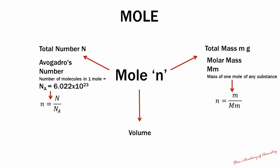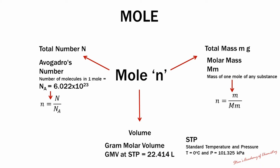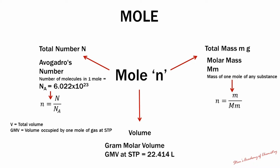The third method for determining the value of mole is from volume. Grammolar volume is the volume occupied by any gas at STP. STP stands for standard temperature and pressure. The value of molar volume is 22.414 liters at STP, where temperature is 0 degrees Celsius and pressure is 101.325 kilopascals. If you know the total volume and the volume occupied by one mole at STP, you can calculate the moles by dividing the total volume by the molar volume, which is 22.414 liters at STP.